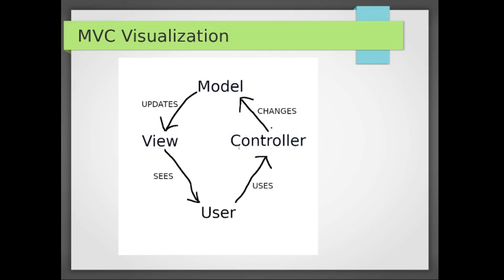Here is a visualization of the MVC model. You have a user that uses the controller — that's where the REST call is made. Then the controller changes the model in some shape or form, and the model updates the view. The view is what the user is seeing. So that's how the flow of operation goes: the user uses the controller, the controller changes the model, the model updates the view, and the user sees the view.